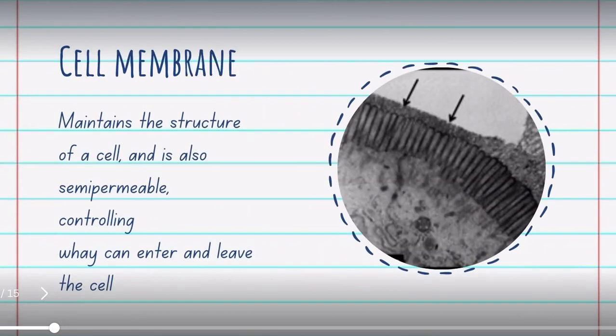Our first cytoplasmic organelle, the cell membrane. It helps maintain the structure of the cell, and it is also semipermeable, meaning it can control what can enter and leave the cell.